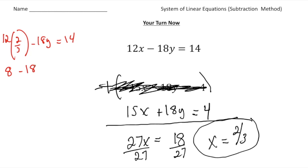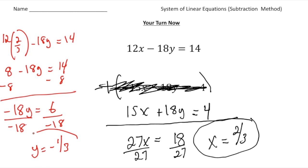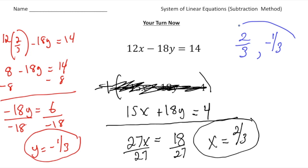Take away 8 from both sides: negative 18y equals 6. Divide both sides by negative 18: y equals negative one-third. So the solution to this problem is x equals two-thirds and y equals negative one-third. How did you do?